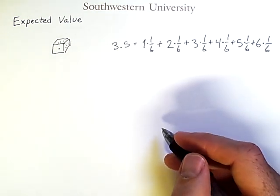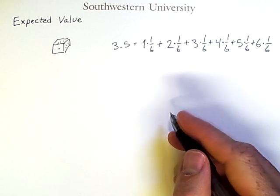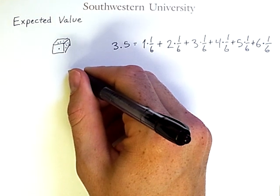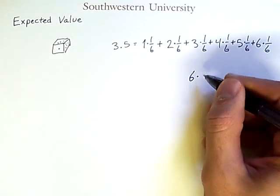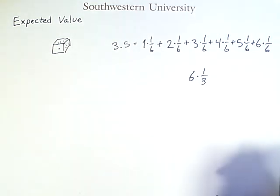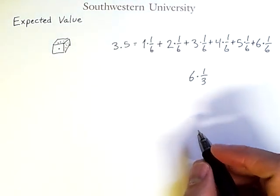But we could also have a weighted die in which certain outcomes are more likely than others. For example, what if I had a die where 6 would be rolled with a probability of 1/3, and then all of the others were equally likely?